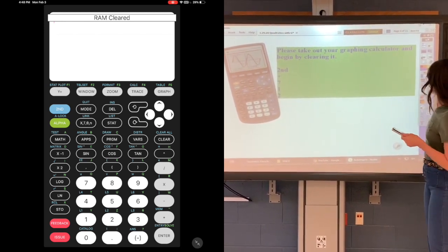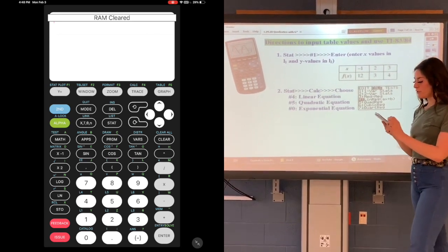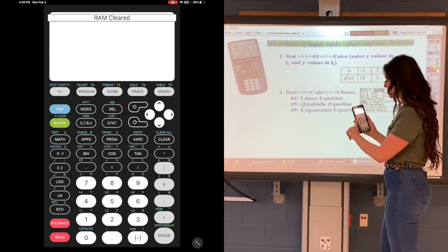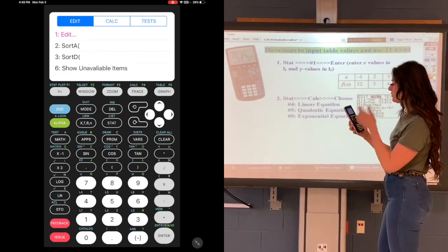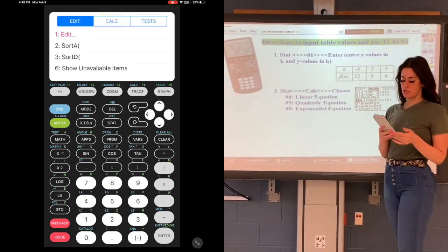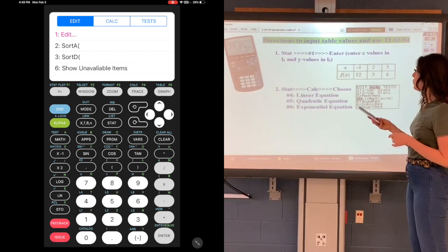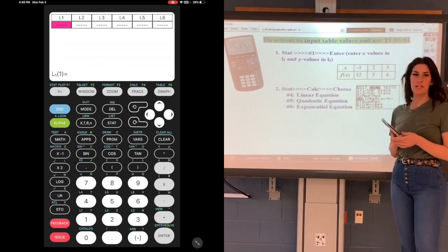So from there, you're going to go to the stat button. If you can find y equals in the upper left-hand corner, go down three and to the right three, press stat. It's going to give you the option to edit a table. Press one, and we're going to start to enter in our table values.